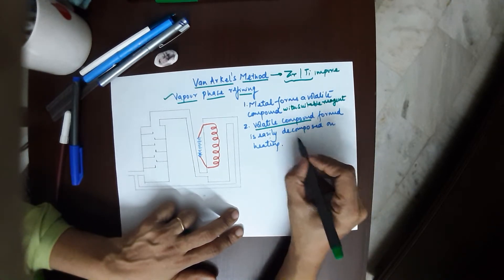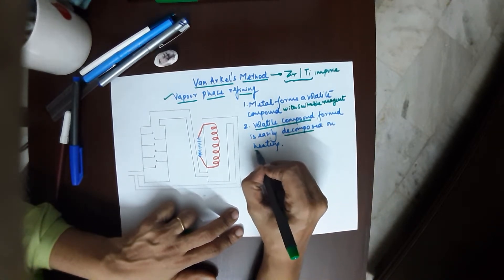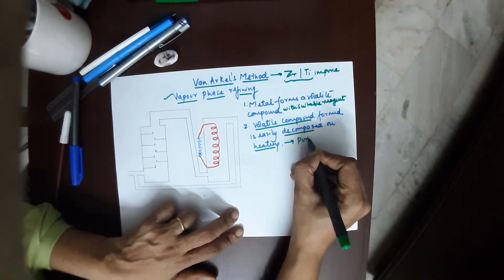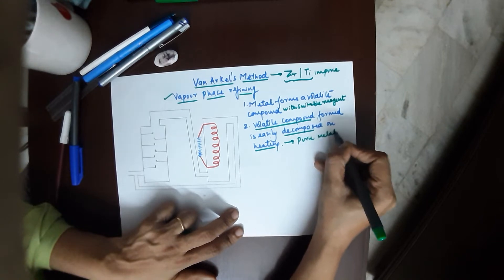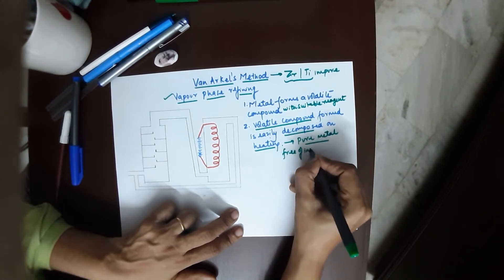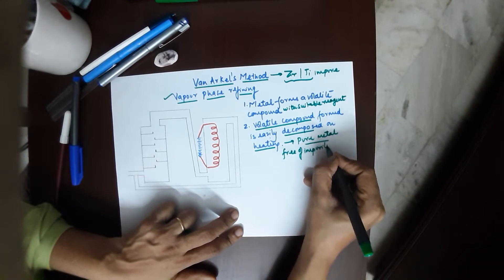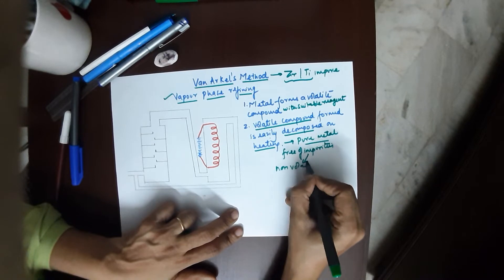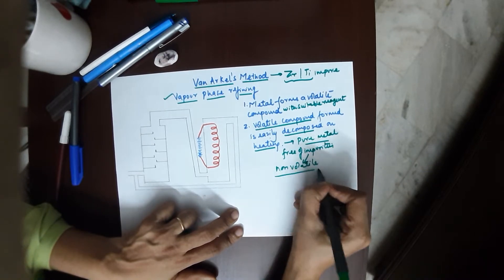The volatile compound is decomposed on further heating. This temperature is going to be higher, so you obtain your pure metal which is free of impurities because these impurities were non-volatile.